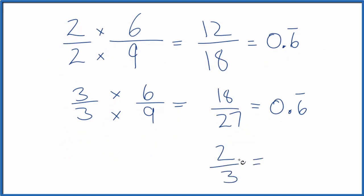And again, 2 thirds, equivalent fraction to 6 ninths. If you divide 2 by 3, you get 0.6. That number repeats. So it's an equivalent fraction.